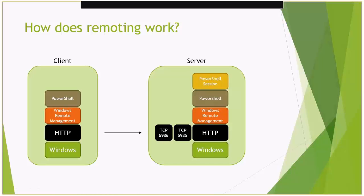If you're a Windows administrator and you go talk to your network team and say you want to manage systems through WinRM and PowerShell remoting, and you can tell them two specific ports to open up on every host, they're going to love you. Traditionally they had to deal with dynamic port ranges — a lot more open — so they'd have to allow a lot more ports for management traffic. Now they can restrict things down to a more predictable traffic pattern.